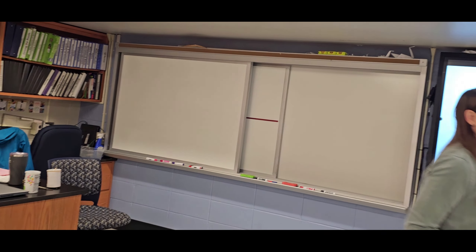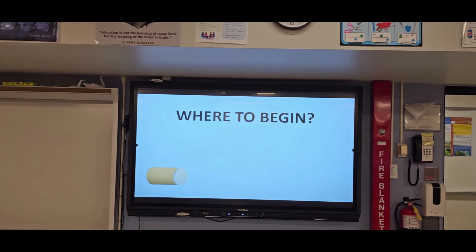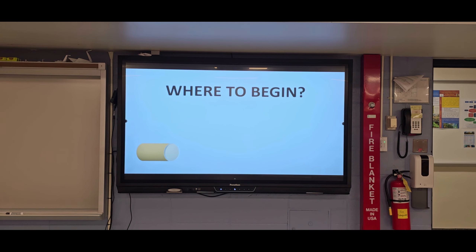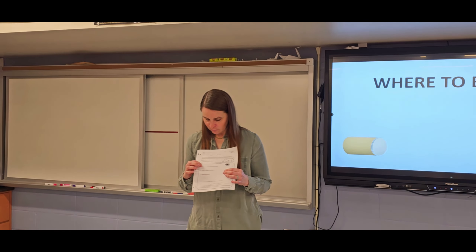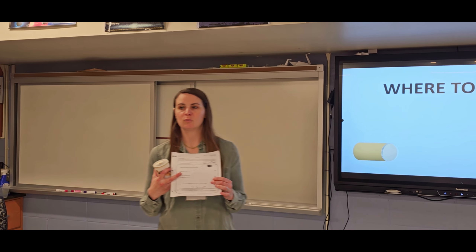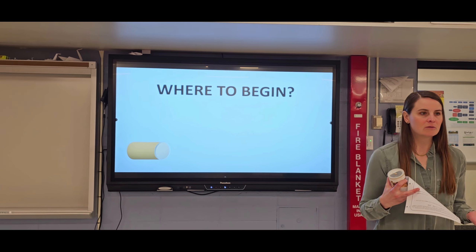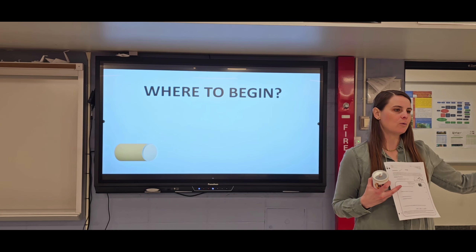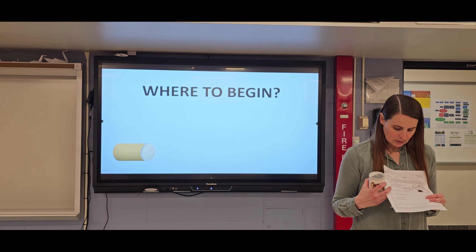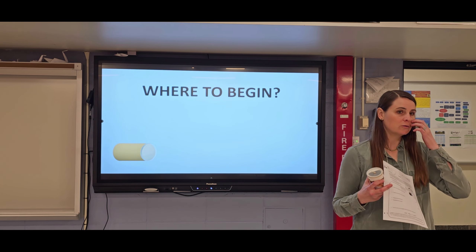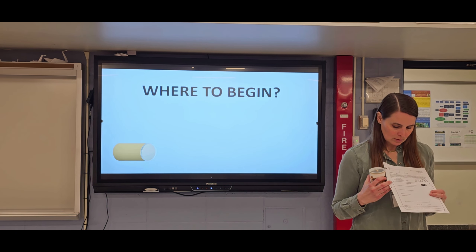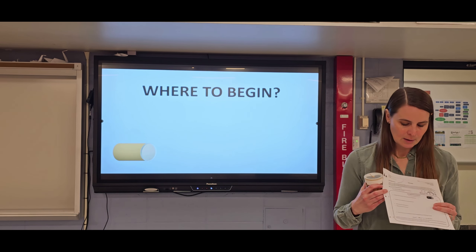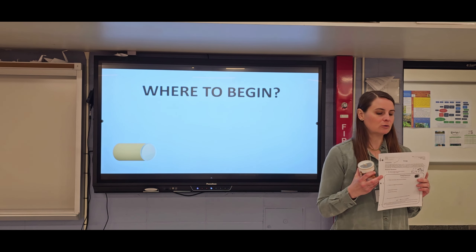If you take a look at the activity, investigation number 11, we have a predict, reason, observe, describe format. Students will first predict what happens after the can is released. I tell them the can is going to be rolled forward, and they predict what will happen. At this point, we've already done Newton's laws and mechanics, so they'll probably say it will roll forward and just eventually slow down. Then they'll observe and describe what is happening. And then they're going to create a model.